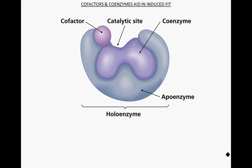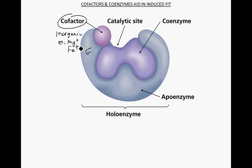Here's another image from another text about this. Now we see the cofactor — here's the enzyme, here's the cofactor, which would be some inorganic molecule like magnesium ions or iron. They're adding this coenzyme, which would be an organic molecule. Again, this all increases the affinity of the active site for the substrate, which increases the rates of reaction.